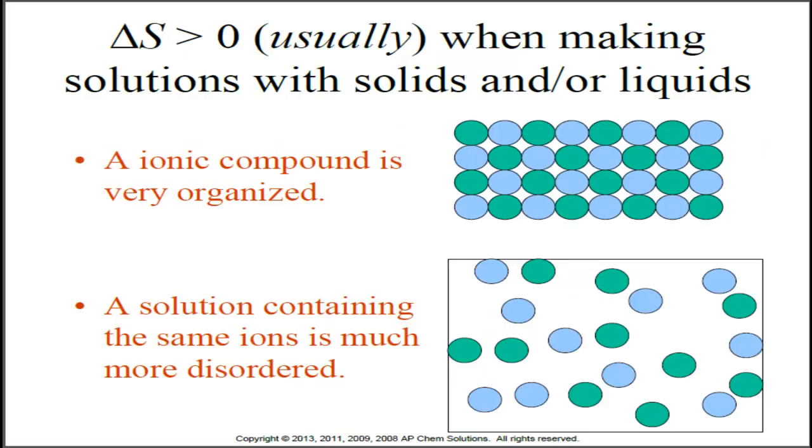We're going to look here at ions in solution. Usually your delta S is going to be greater than zero when making solutions with solids or liquids. When an ionic compound dissolves in a liquid, the entropy will usually increase greatly giving you a positive value for delta S.